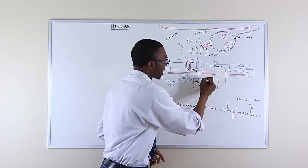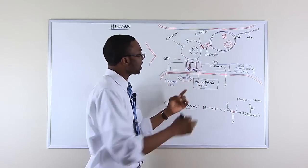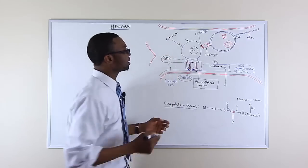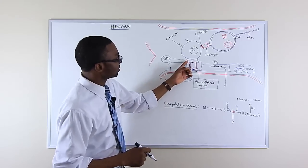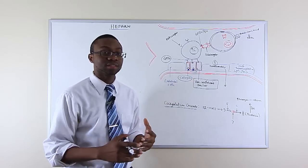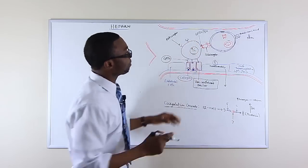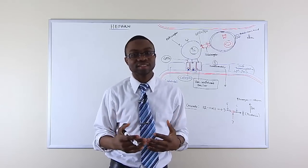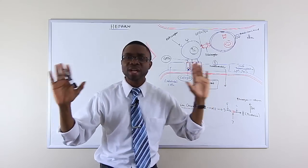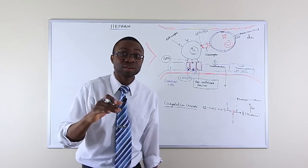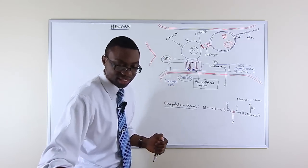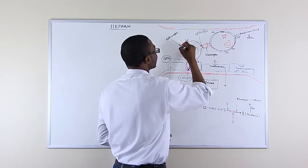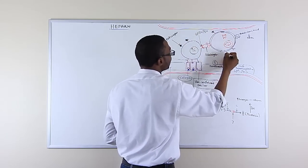Once von Willebrand factor is secreted, it stacks up right there and binds to collagen. As soon as von Willebrand factor is bound to the collagen, platelets bind to von Willebrand factor via the protein glycoprotein 1B. That glycoprotein 1B binds to a receptor on the von Willebrand factor. Once the platelets are activated, they secrete adenosine diphosphate.